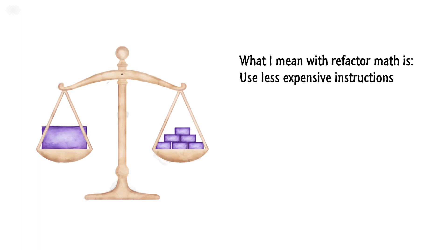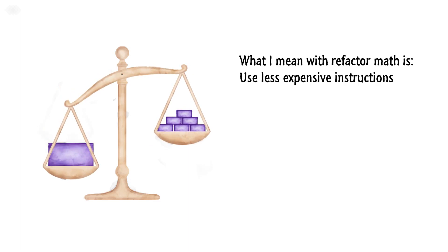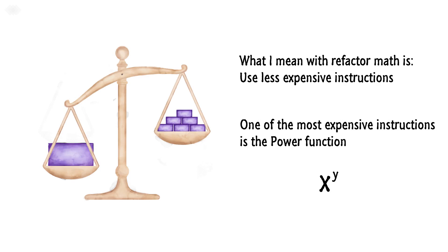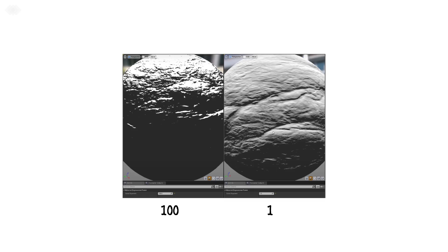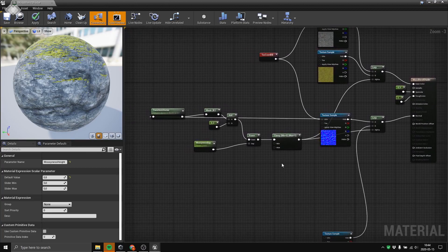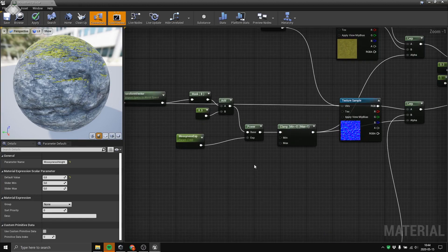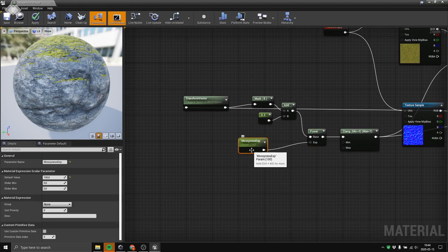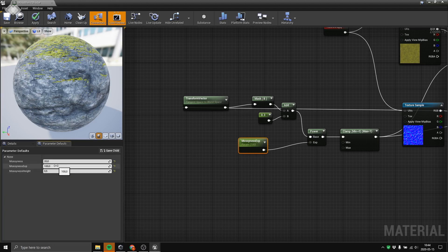Refactor math. What I mean by refactoring math is not necessarily using fewer instructions or nodes in a graph, but cheaper instructions instead of more expensive ones. One of the more expensive instructions is the power function. The most common use case is when you want a sharper, more crisp look — usually in a scenario like a mask controlling where moss is on an object. The left picture has a power of 100, the right one has a power of 1. I will now show you a live example in the Unreal Editor. Here you can see a classic blend shader — we have a power node, and the exponential part is set to 100.